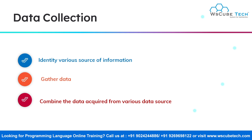The first step starts with data collection, or you can simply call it the gathering of data. As I said, data acts as a fuel for machine learning. So once the problem statement is clear, the very first step of the machine learning life cycle is to gather the raw data related to the problem statement.